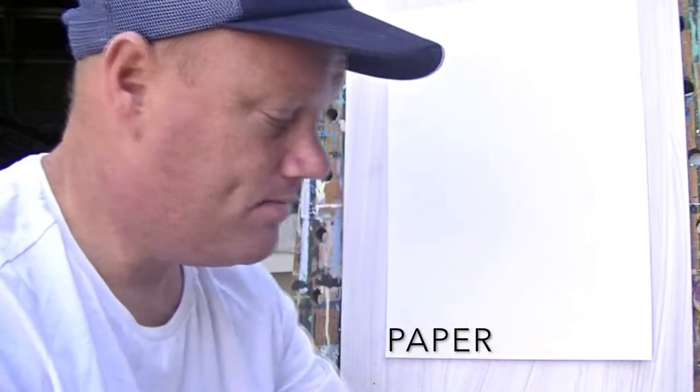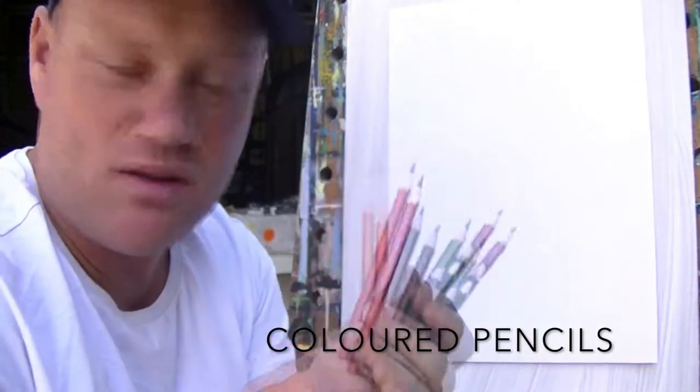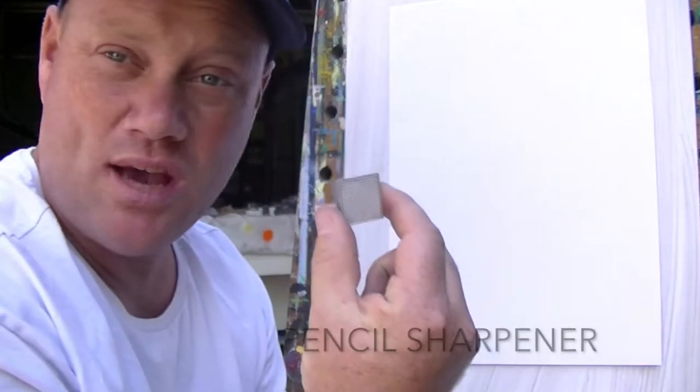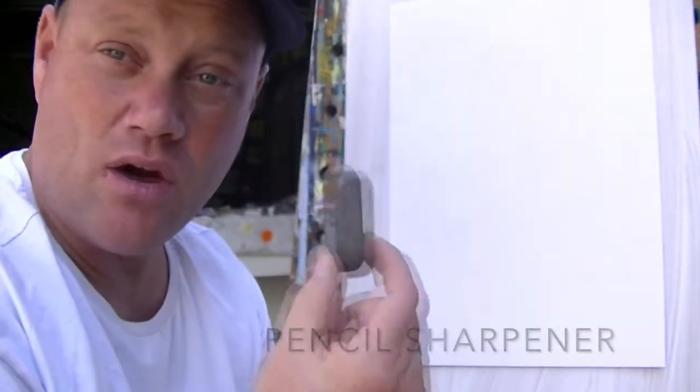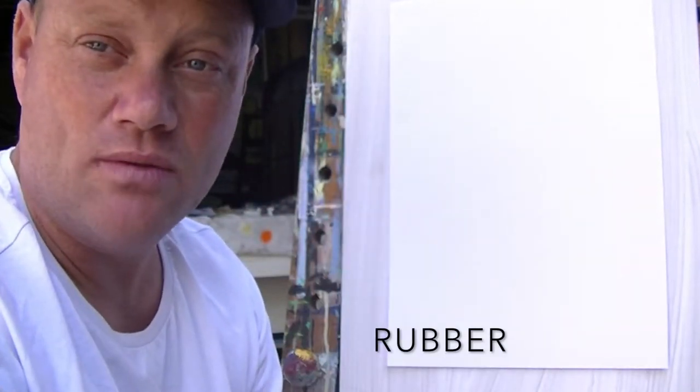So for this task you're going to need obviously some paper, you're going to need some different colored pencils, a pencil sharpener, and a rubber is really handy for this as well. So this is how the optical illusion drawing works.